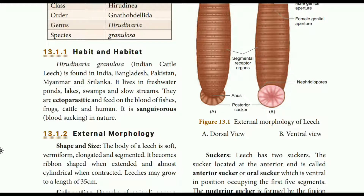The animals it feeds on include cattle, cow, and humans. It is sanguivorous in nature — that is, carnivorous and feeding on blood.